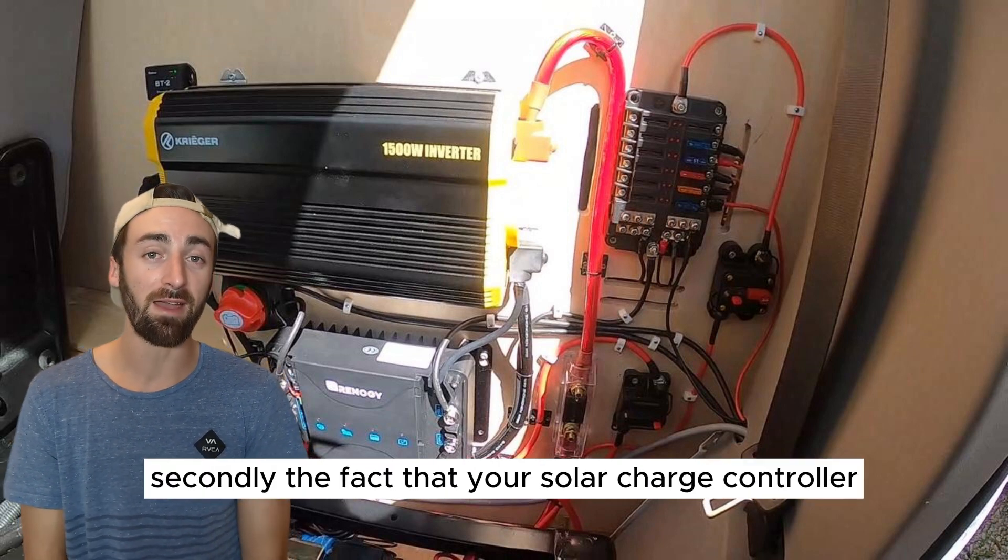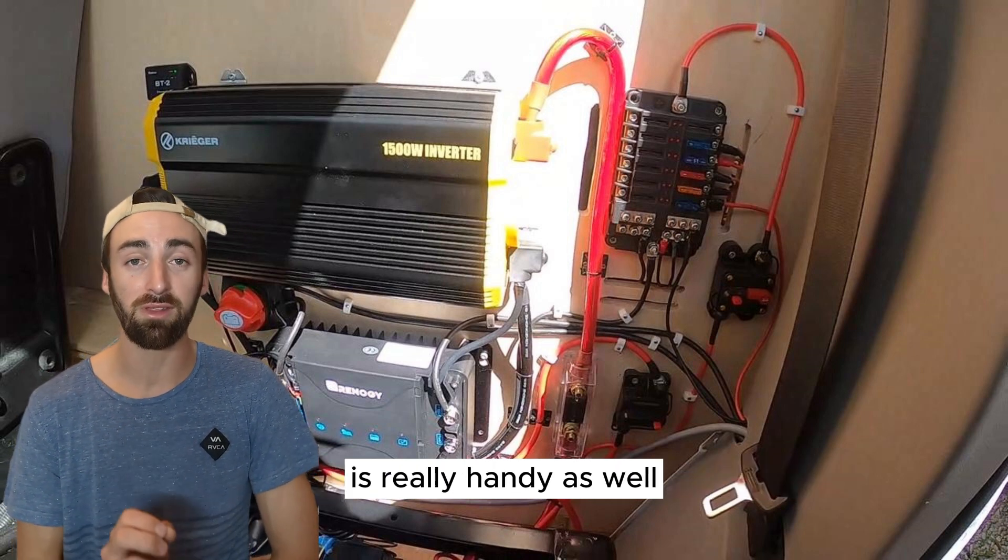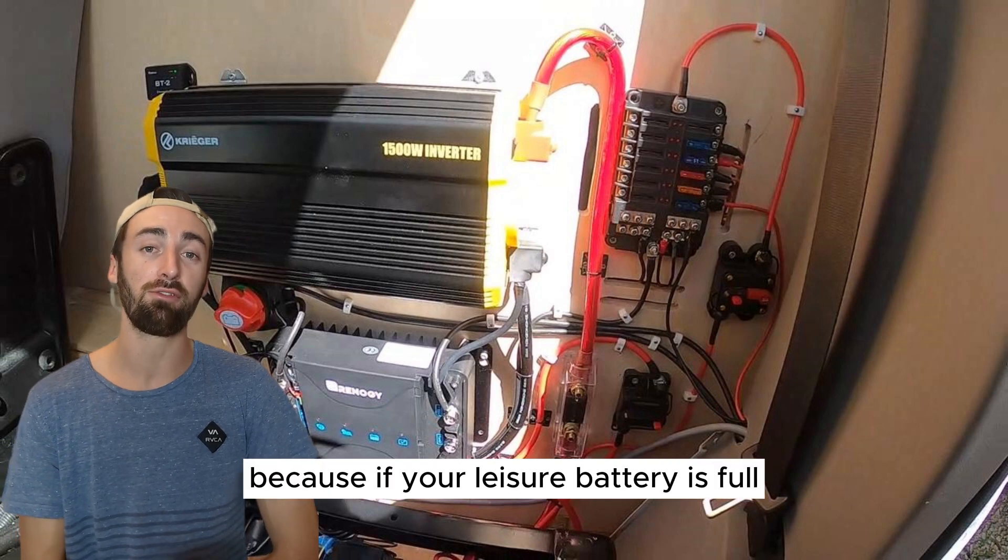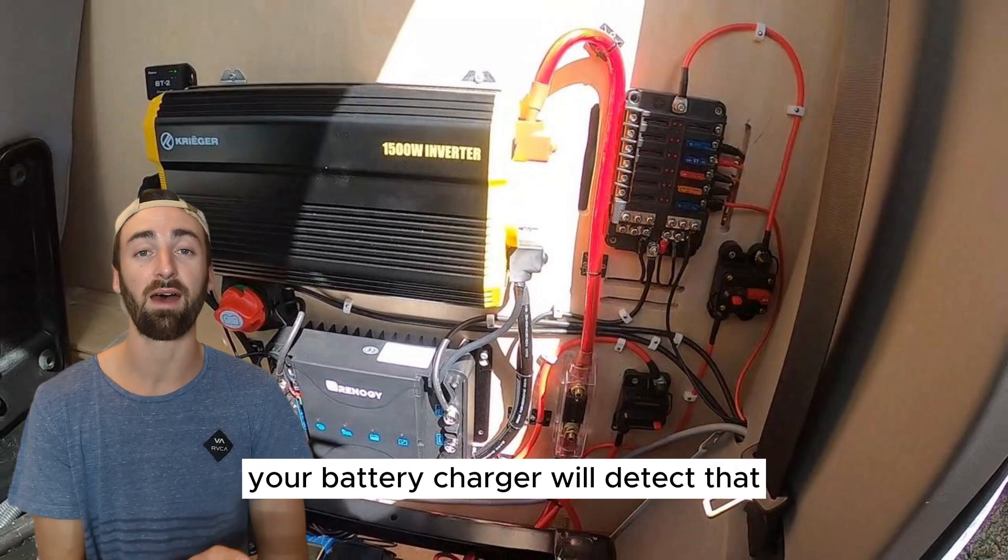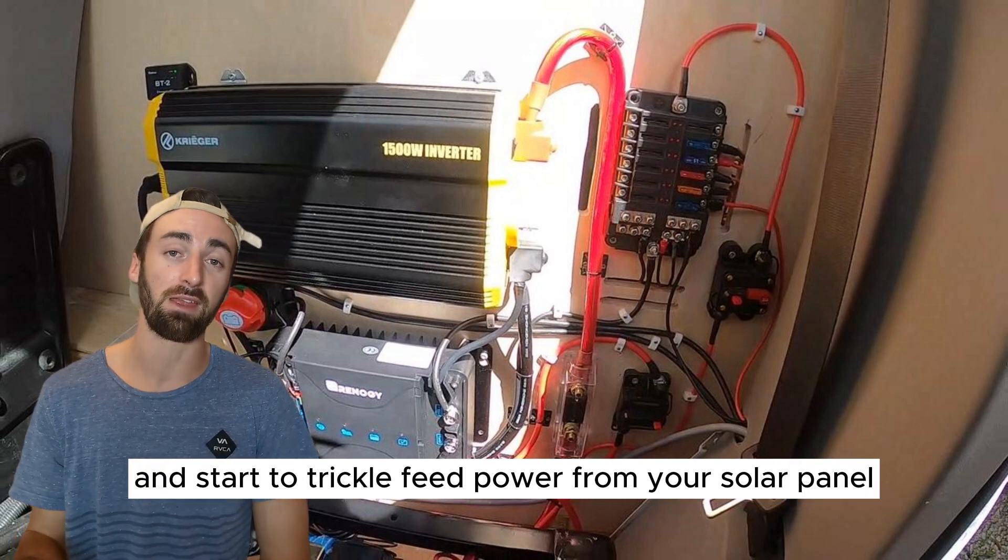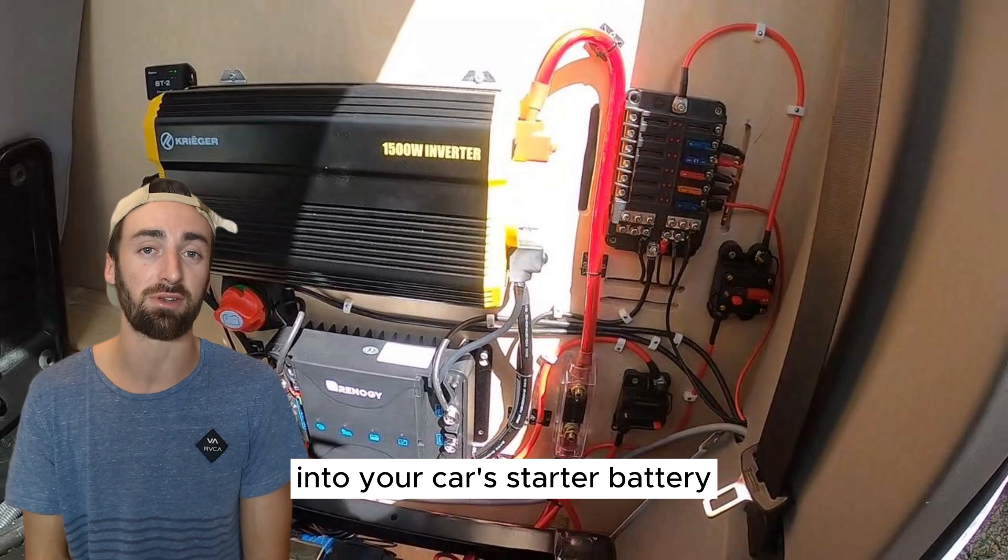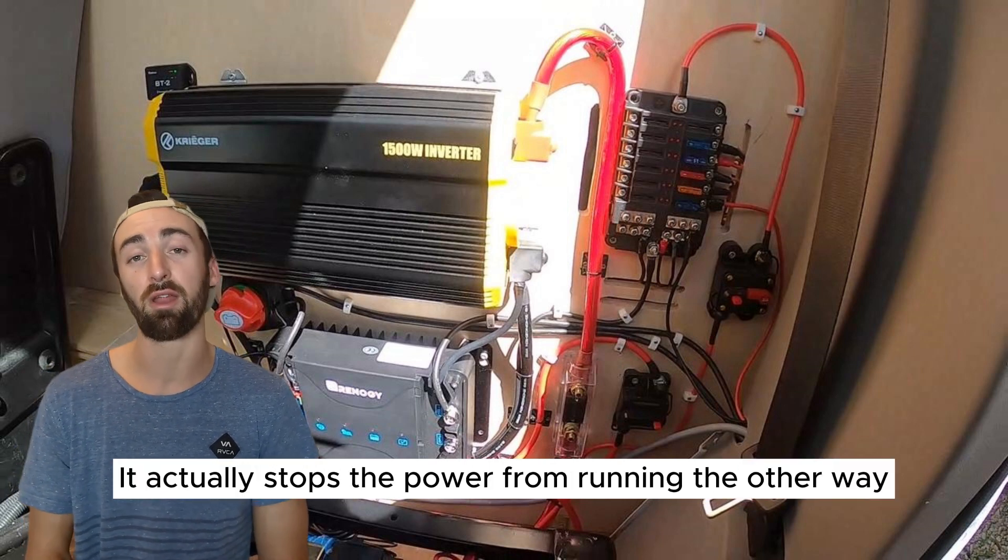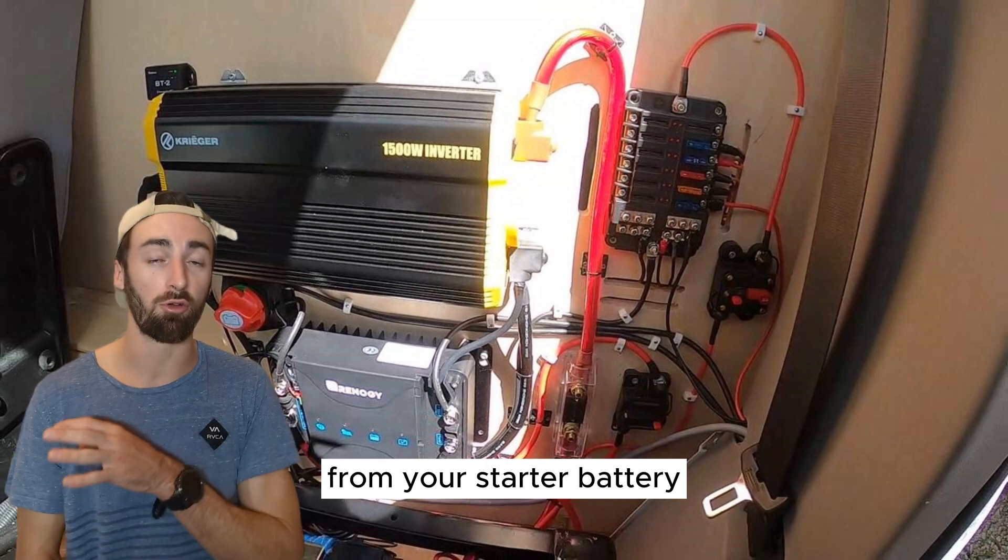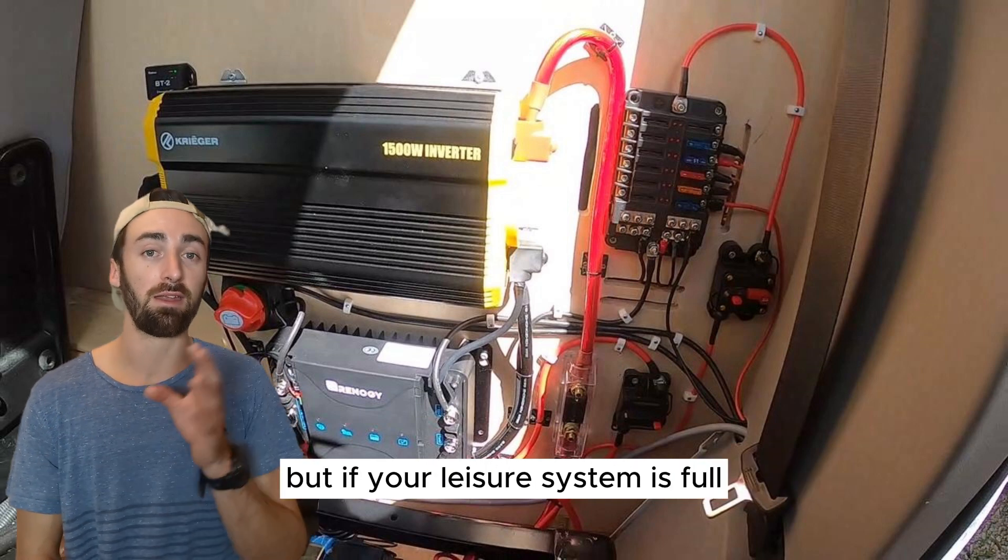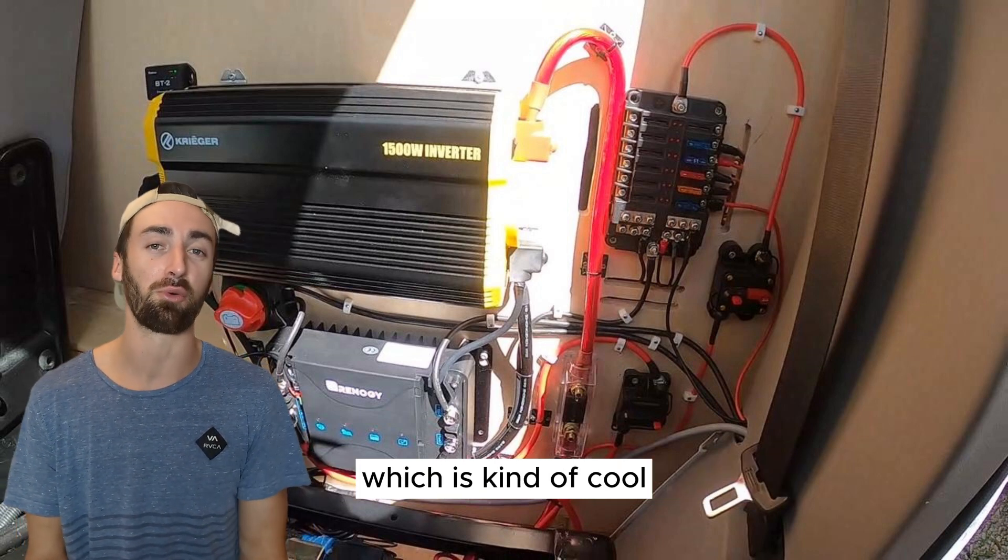Secondly the fact that your solar charge controller is connected to your alternator is really handy as well because if your leisure battery is full your battery charger will detect that and start to trickle feed power from your solar panel into your car's starter battery. It actually stops the power from running the other way so your leisure system can never draw power from your starter battery but if your leisure system is full you can charge your car's starter battery which is kind of cool.